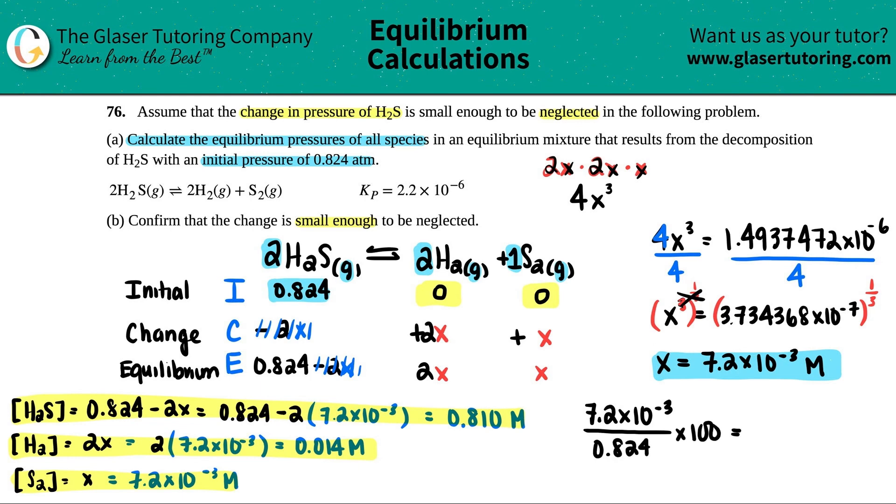If I did this properly with neglecting the X, my answer should be 5 or less. So 7.2 times 10 to the negative third, divided by 0.824, times it by 100. Yeah, I get like 1%, less than 1%. I get like 0.8%. So that signifies that you can neglect the X.